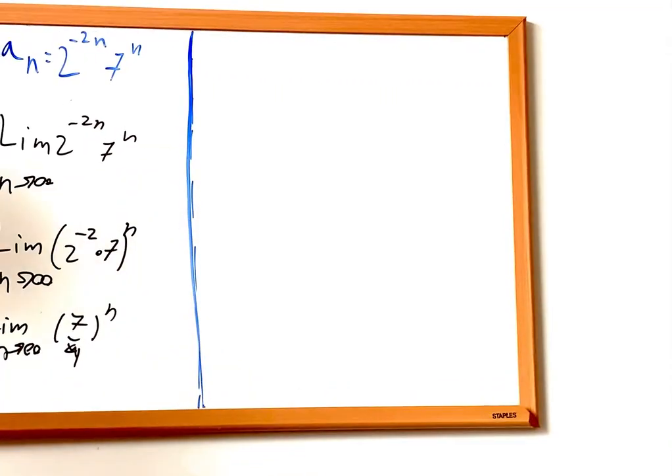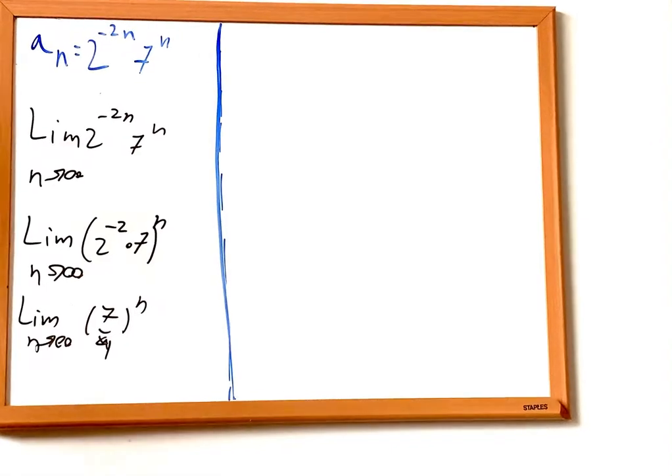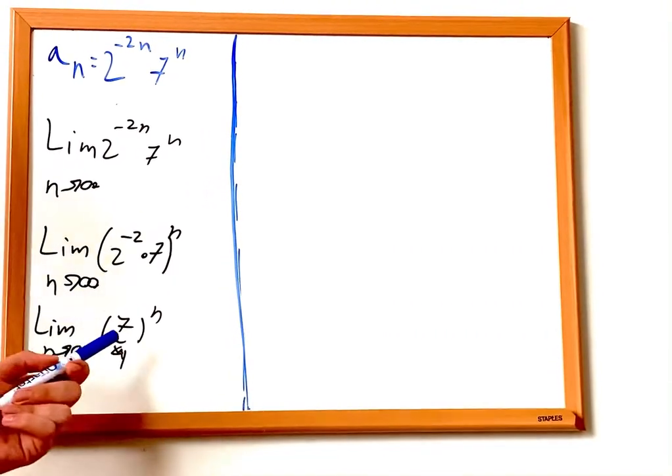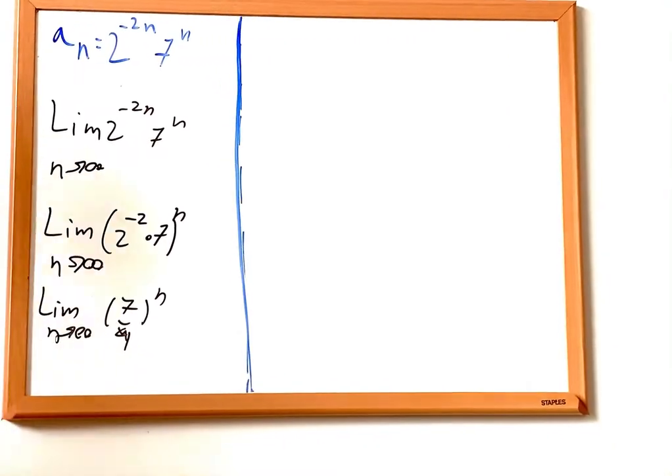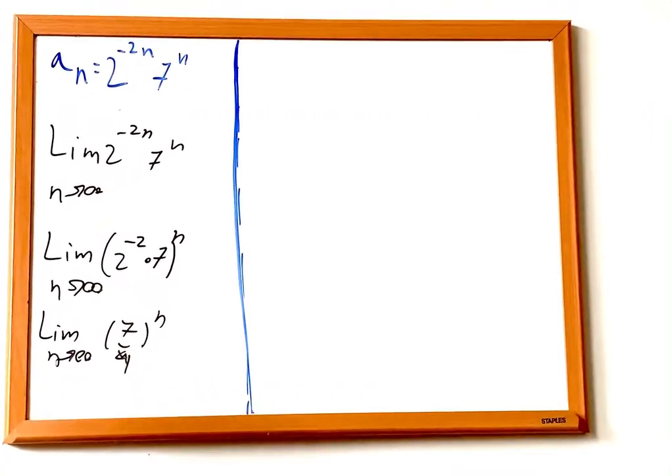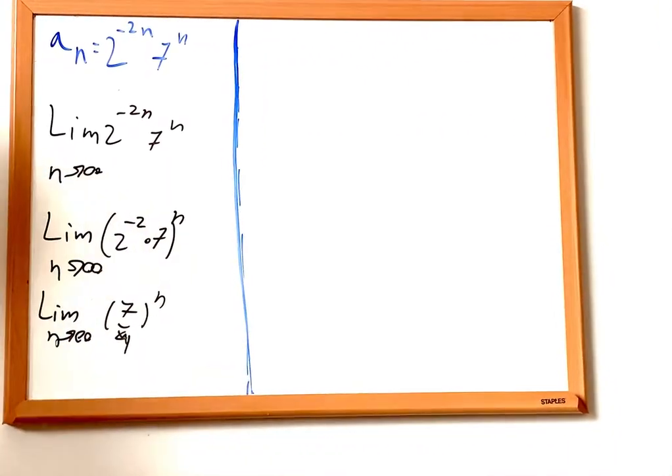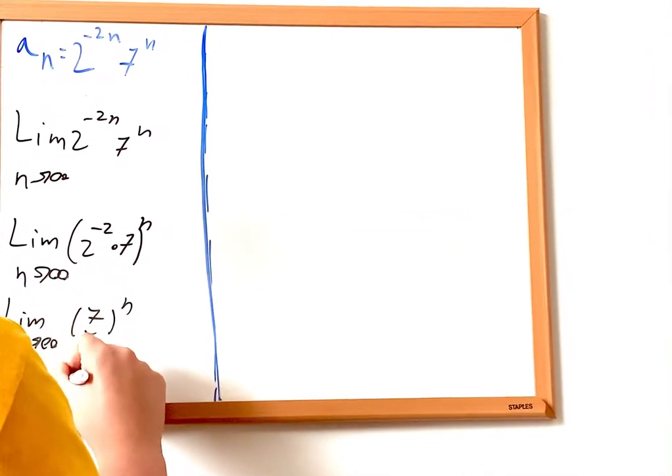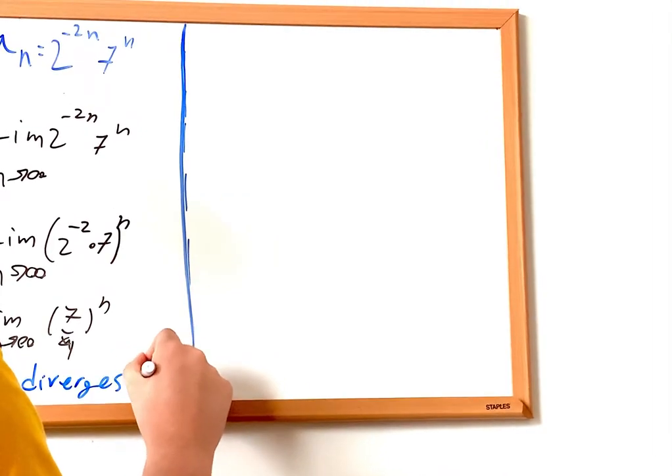Now we see that this expression is a geometric series and it's getting bigger and bigger. And if we plug in 1, it's 7 over 4. If we plug in 2, it's 49 over 16. And we see it approaching infinity. So if we plug in infinity, anything to the power of infinity is infinity. So we can say that a sub n diverges to infinity.